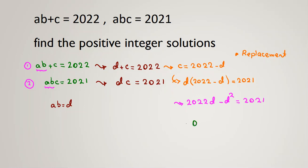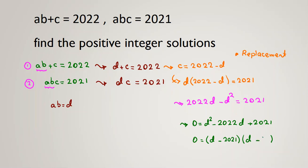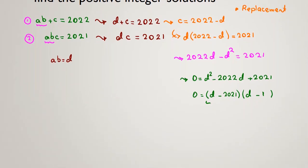Rearranging gives us D squared minus 2022D plus 2021 equals 0. This is a quadratic — we can factorize it. We need two numbers whose product is 2021 and whose sum is negative 2022. Those are negative 2021 and negative 1, giving us (D minus 2021)(D minus 1) equals 0.